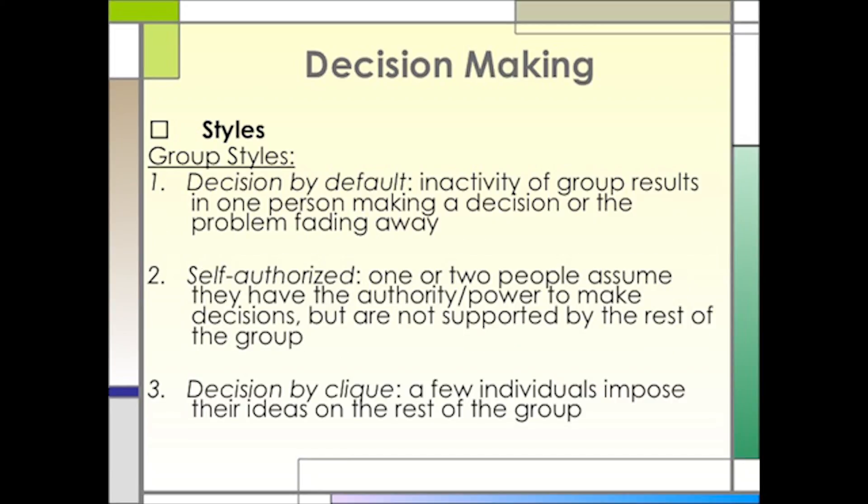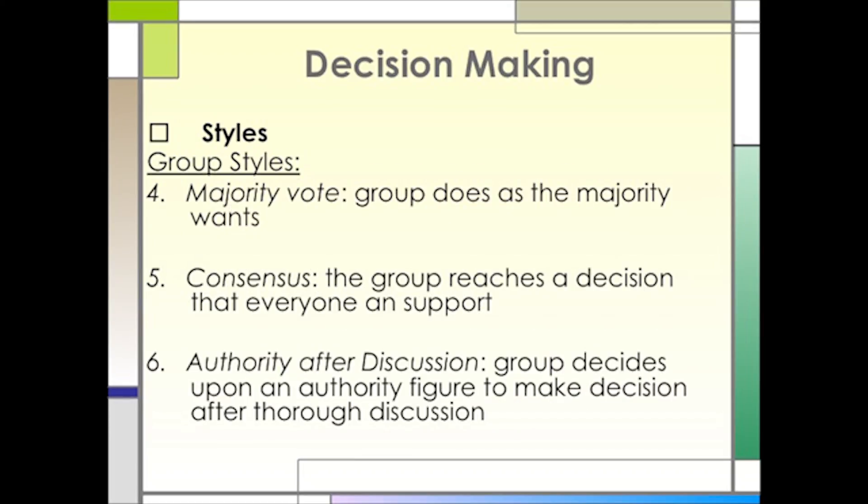If you've ever been in a group, I'm sure you've seen how decisions are made. They may be made by default because nobody is doing anything. They may be self-authorized by those who step to the forefront but are not supported by the group. Or they may be decided by a subgroup that seems to band together and force their will on others. Obviously, group decisions may be made by a majority or consensus vote, and this decision is generally made beforehand. Or an authority figure may emerge after group discussion and that person has the final say.